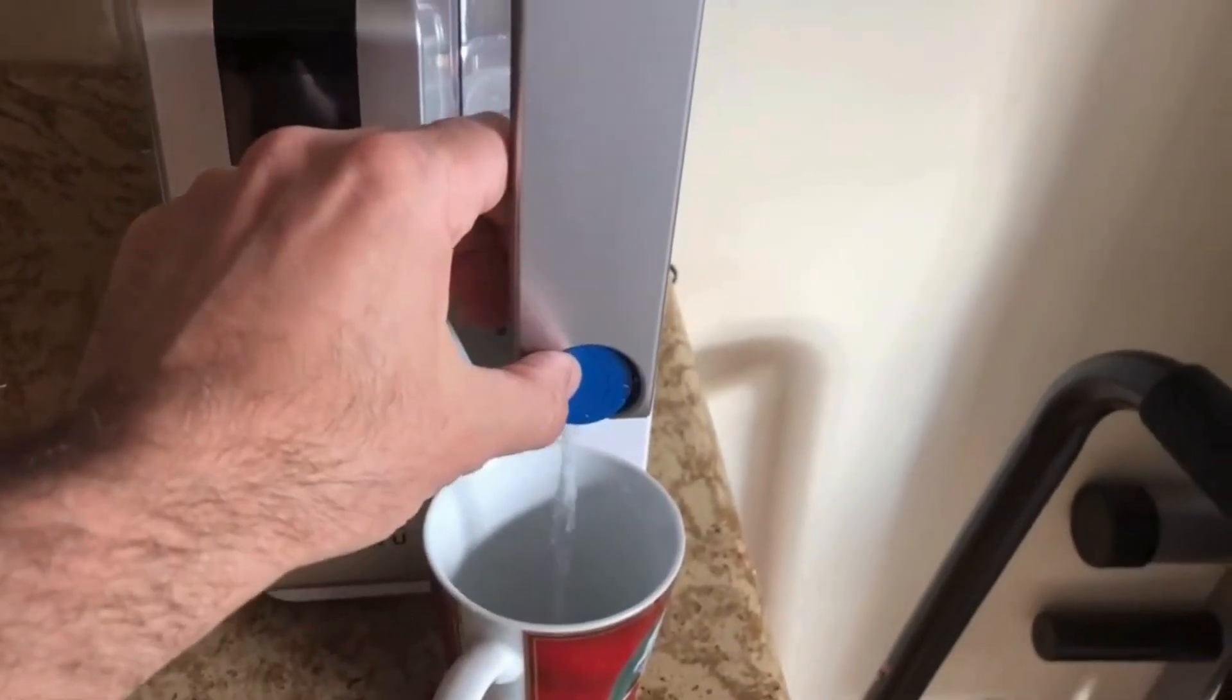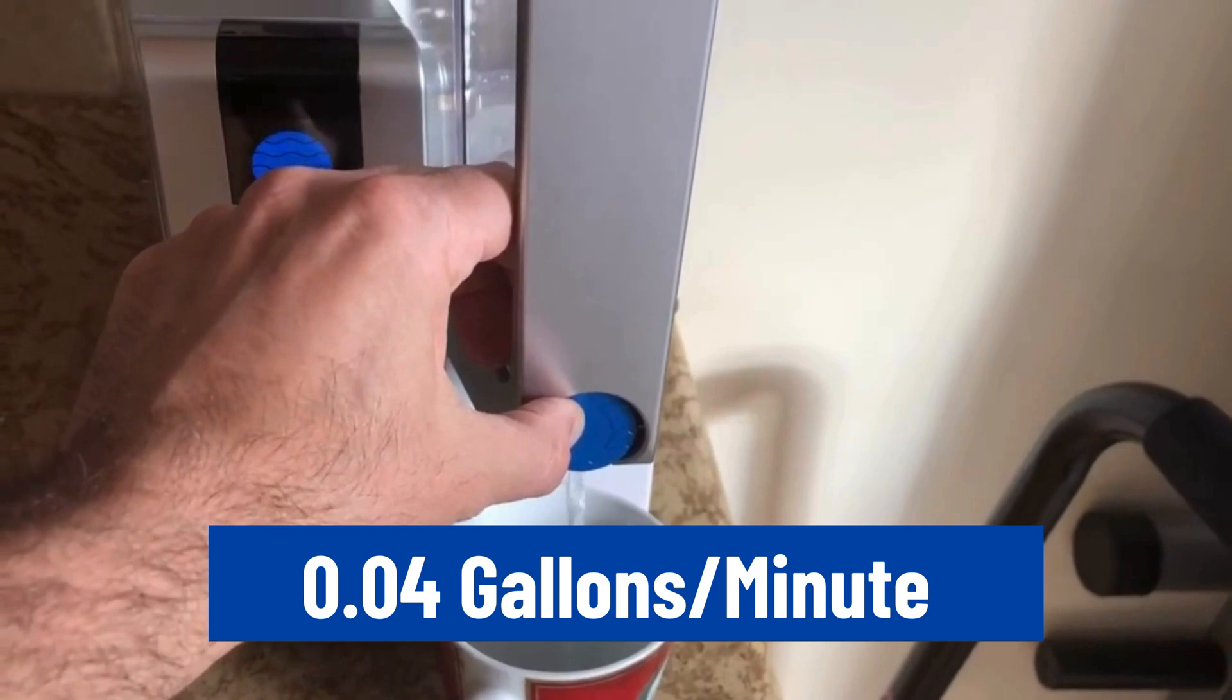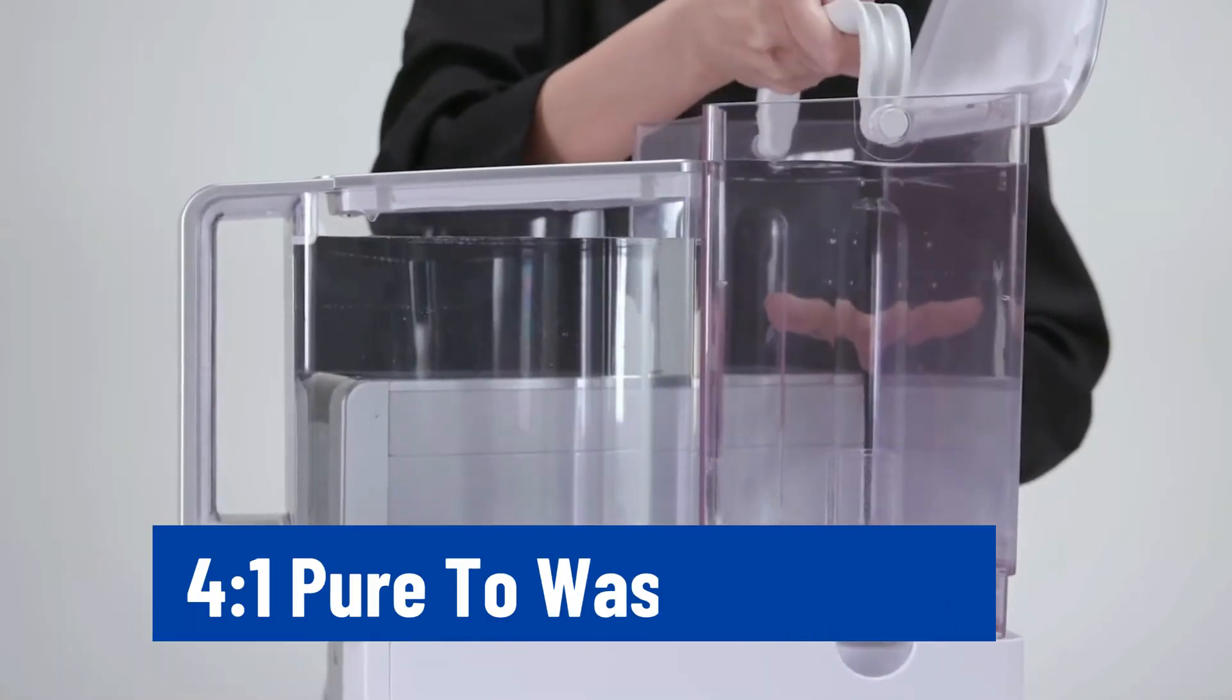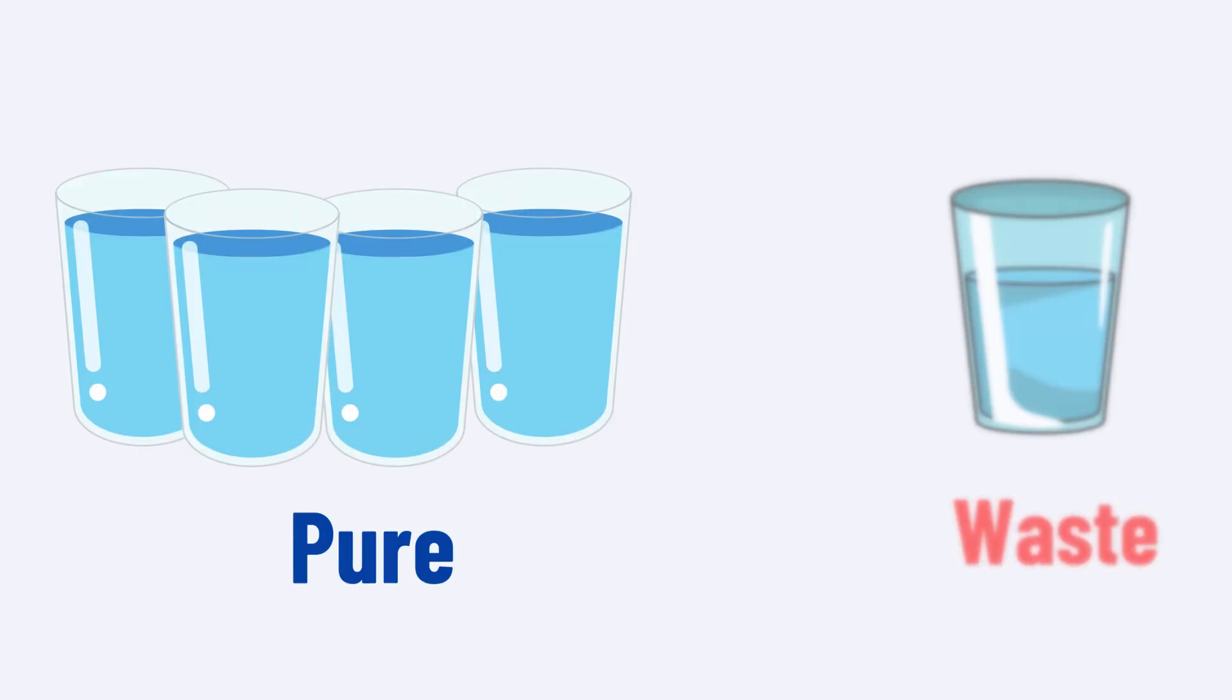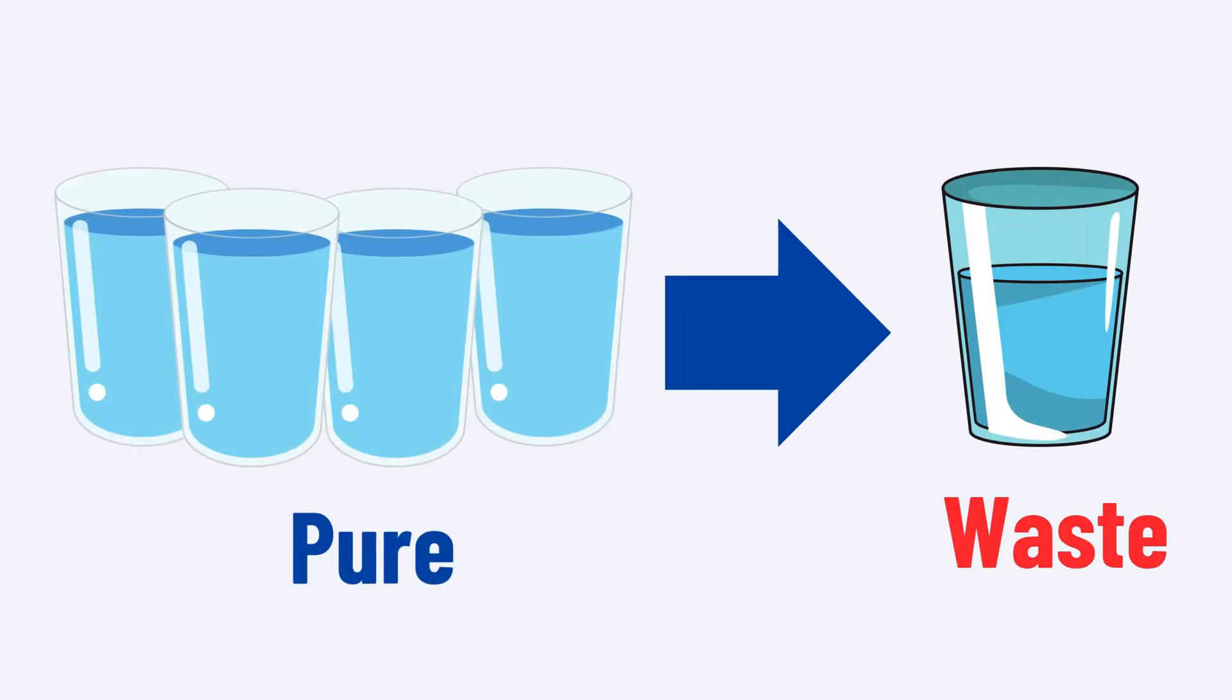Its water flow rate is 0.04 gallons per minute. The unit has a 4 to 1 pure-to-wastewater ratio, meaning only one gallon of water is wasted for every four gallons of clean, filtered water produced.